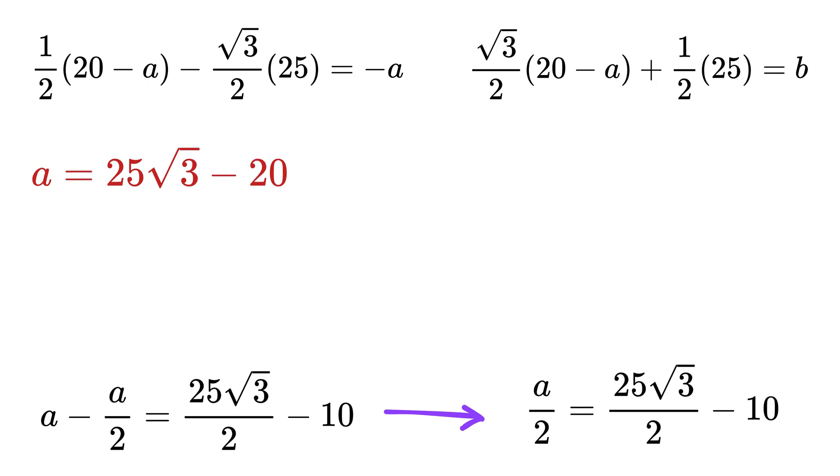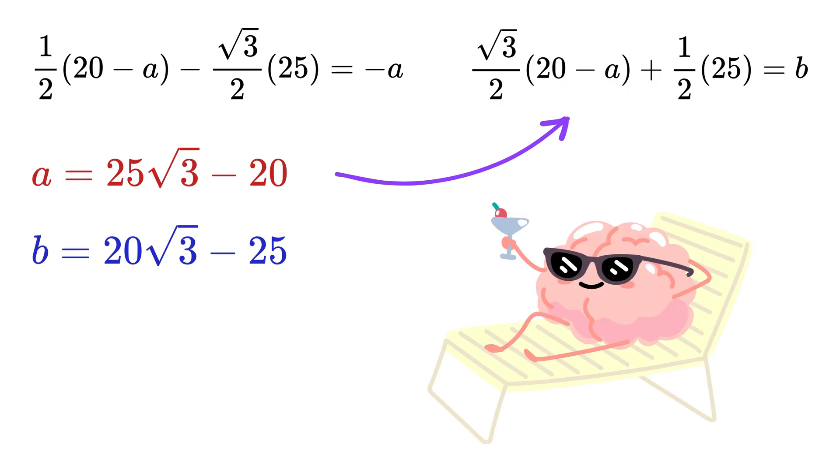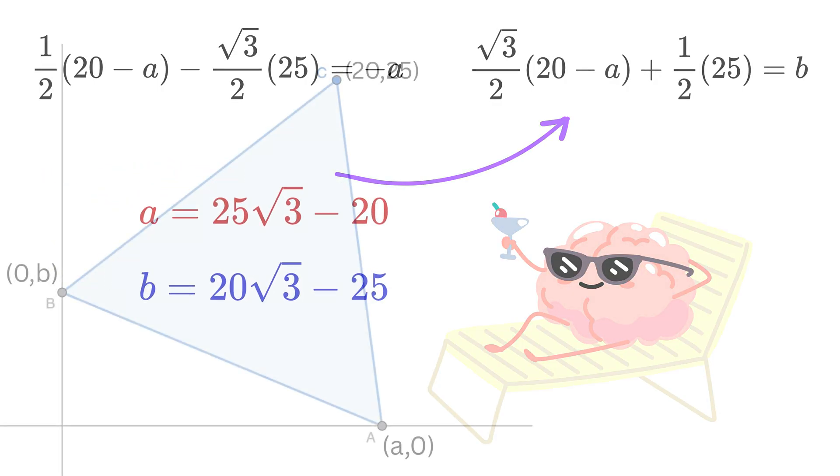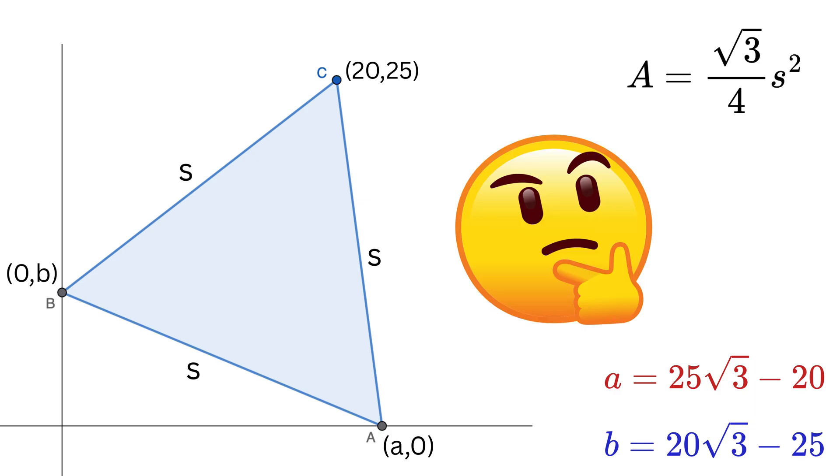Now, simply substitute a in this equation to get b = 20√3 - 25, and we are almost done. Since we need to find the area of this equilateral triangle, we need the side length, which we assume as s, and then the area equals (√3/4) times s². But, how to find s²?